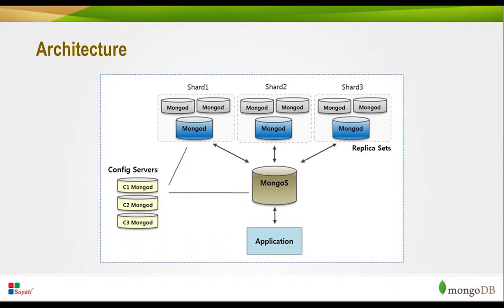A production sharded cluster requires at least three config servers, each on a separate machine. A shard is a single MongoDB instance or a replica set that stores some portion of a sharded cluster's total data set. In production, all shards should be a replica set, and each shard contains a different subset of data. A replica set in MongoDB is a group of MongoDB processes that maintain the same data set.